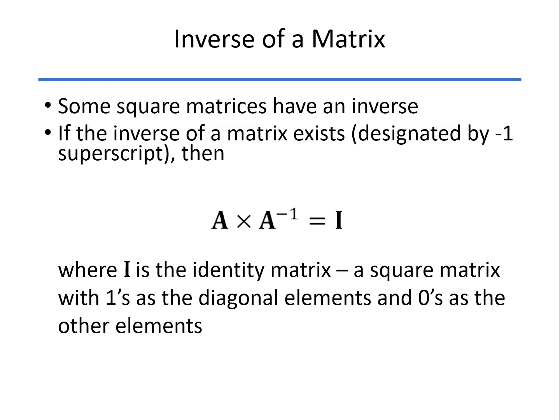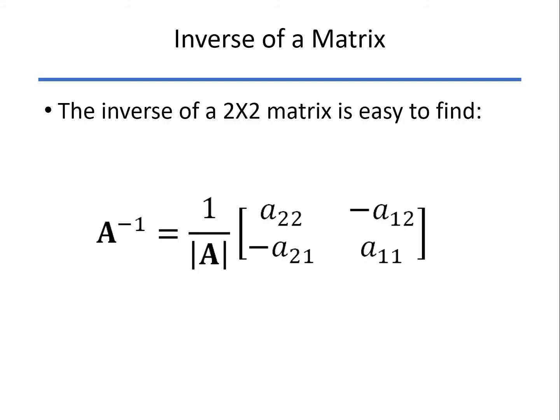An inverse of a matrix only exists for square matrices, and not all square matrices will have that inverse. If it does exist, though, then when you multiply a matrix by its inverse, you end up with the identity matrix. That is, the square matrix that has only ones on the diagonal and zeros everywhere else.